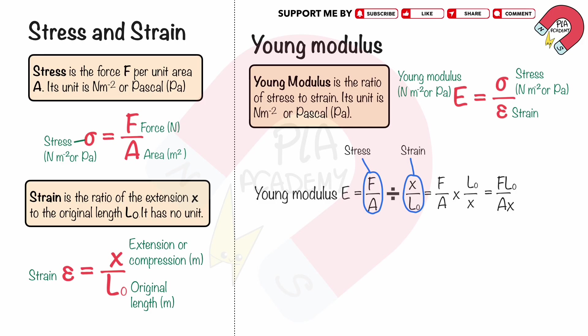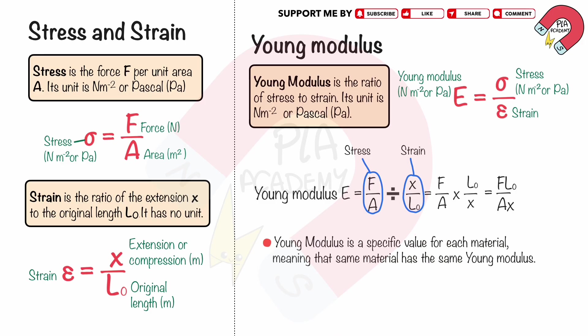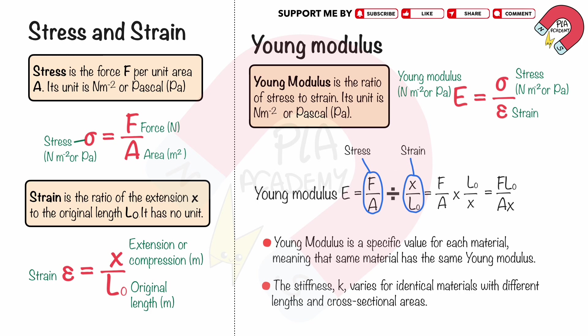We can use this equation to find the Young's modulus E when we know the applied force F, the original length L0, the cross-section area A and the extension X. The Young's modulus is a specific value for each material, meaning that the same material has the same Young's modulus. The stiffness K varies for identical materials with different lengths and cross-sectional areas.